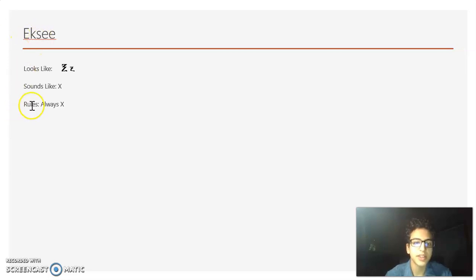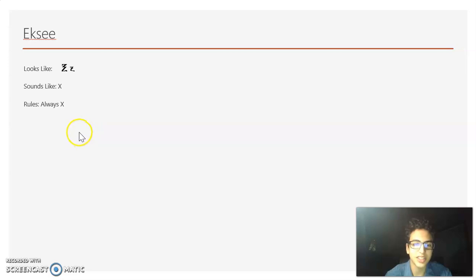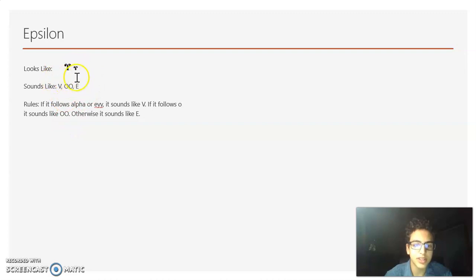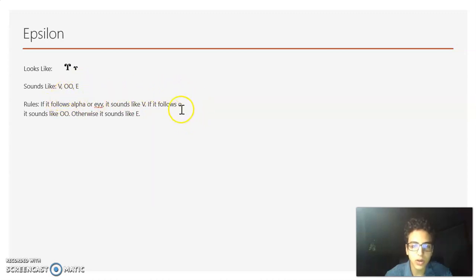Now we have Xe. It looks like Zeta but has a little extra part in the middle, and whenever you see Xe, it always sounds like an X. Now we have Epsilon — it looks sort of like this, and it can sound like a V, an O, or an E. If it follows Alpha or E, it sounds like a V — so that would be AV or EV. If it follows an O, it sounds like O. Any other time, it's an E.